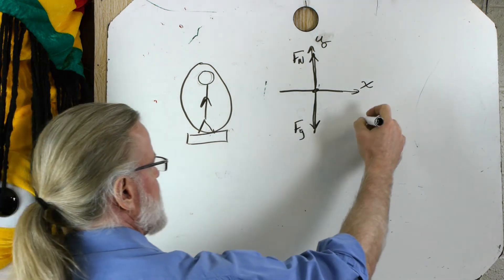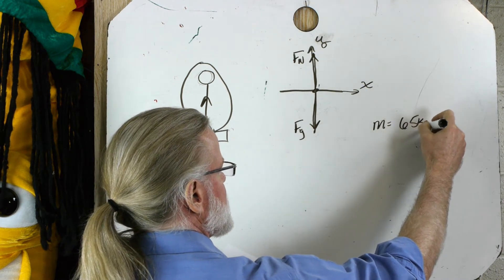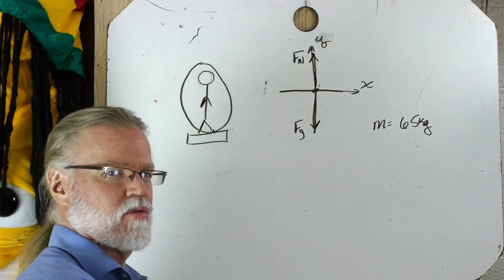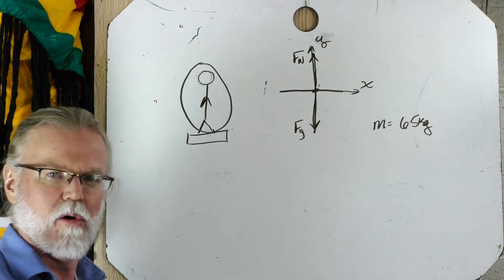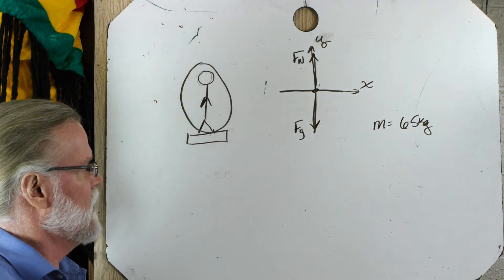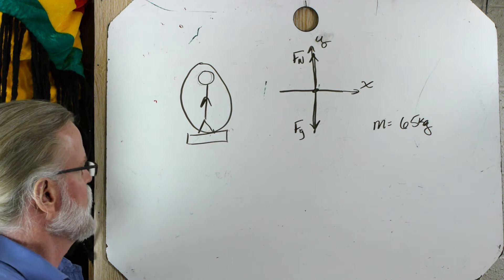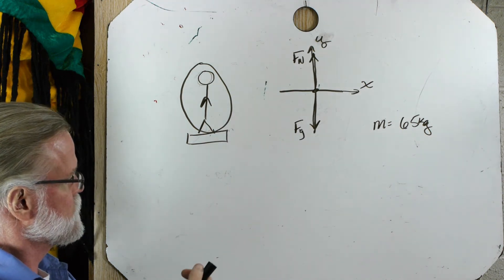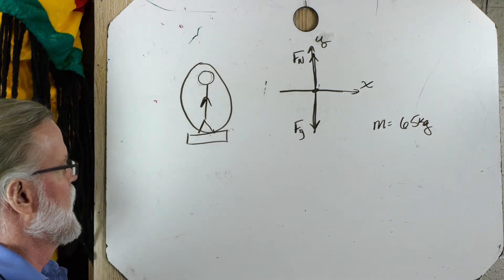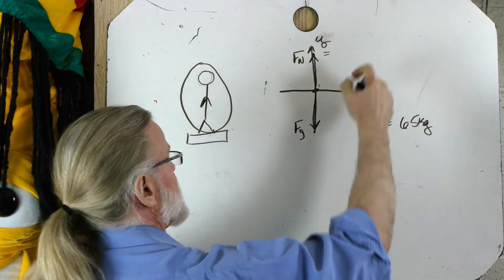We know the mass of Mr. Bieber is 65 kilograms. And the bathroom scale reads 620 newtons. Now what you have to know to solve a problem like this is which one of these vectors is the bathroom scale. Is it the normal force or the force of gravity? Well, the bathroom scale is actually this right here and it's what's pushing up on the person standing on it. So this is going to be the 620 newtons.